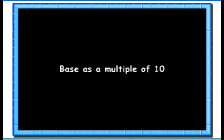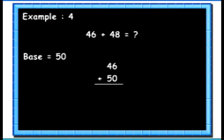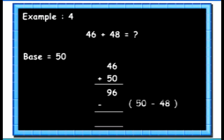Now we will see some examples where we take the base as a multiple of 10. Here we will add 46 and 48. To add 46 and 48 we will take the base as 50. 46 plus 50 gives us 96. Then we will subtract 50's complement of 48 from this 96. 50's complement of 48 is 2. 96 minus 2 gives us the answer as 94.